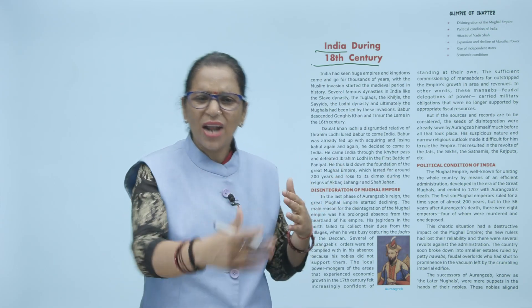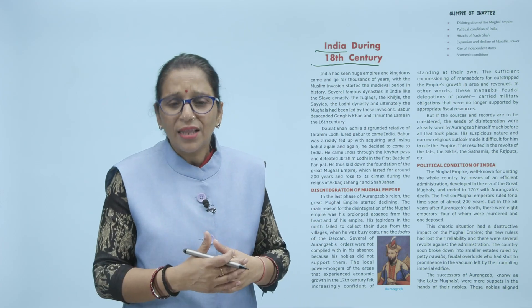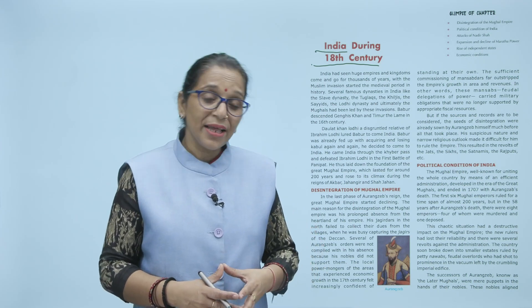India had seen huge empires and kingdoms come and go for thousands of years — ek empire aata dusra aata, ek jaata tha dusra jaata tha. Many rulers ruled over India one after another. Then we have seen the period of Muslim invasion also, which started in the medieval period in Indian history. The attackers came in, hamla kiya, hamaari properties ko le gaye. Then we have seen several dynasties established from outside, like the Slave dynasty, Tughluq, Khilji, Sayyid — all these dynasties.